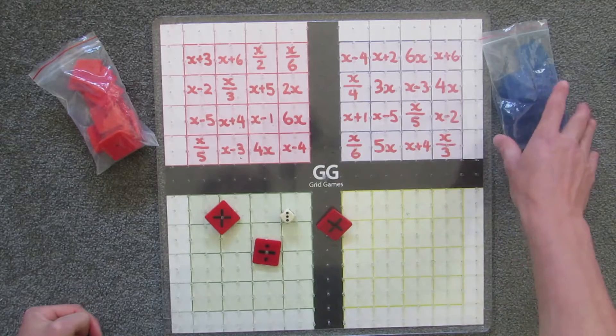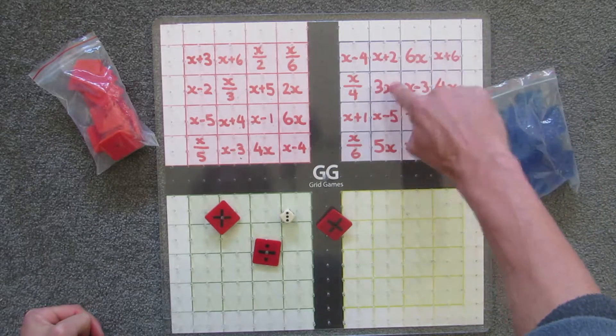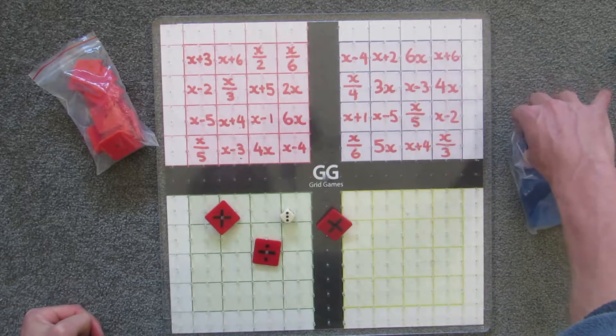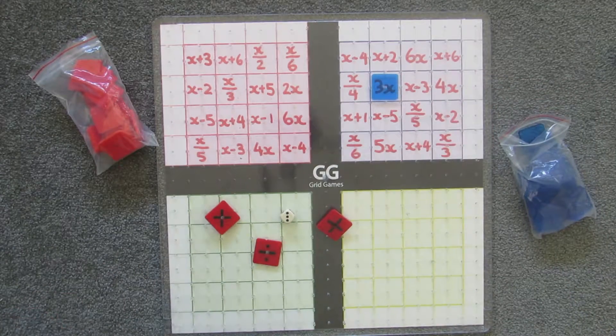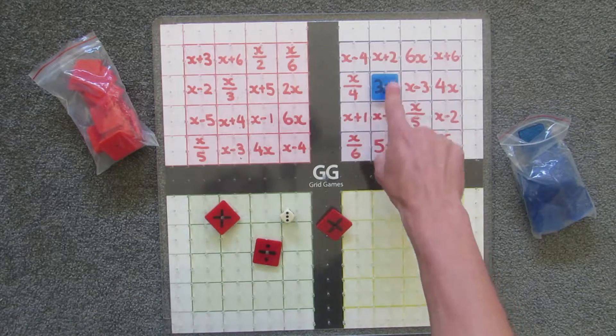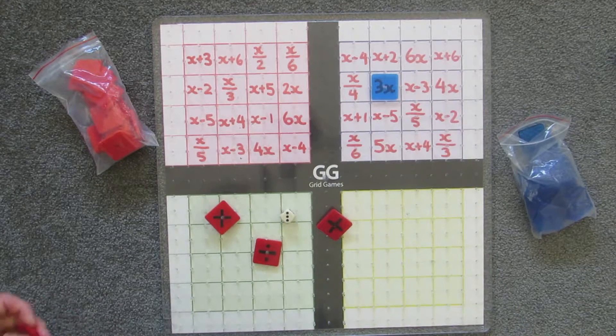So this person doesn't have anything on their grid that will leave them with just x after they've performed this operation. Blue team does, however, because this 3x is the same as three lots of x, and if you divided that by three, you'd be left with one lot of x, or just x. And so if ever you can do that, you can put a tile over that specific square.